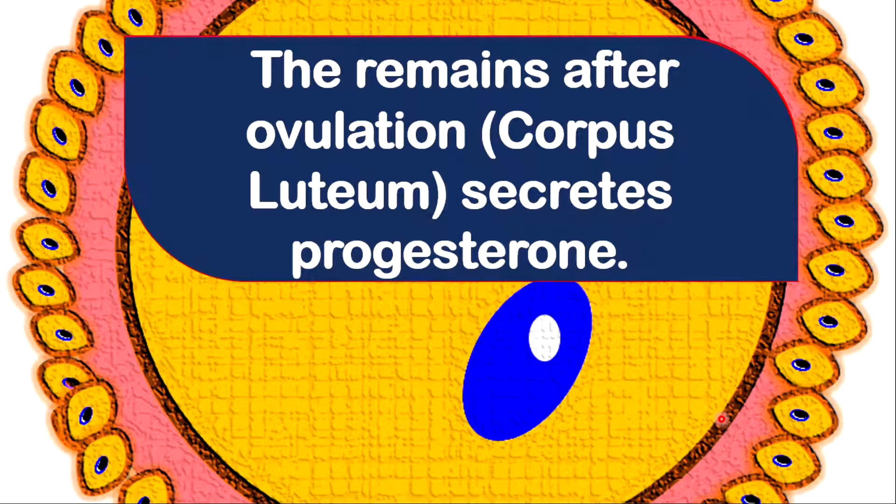The remaining portion of the egg after ovulation is called the corpus luteum. The corpus luteum is responsible to secrete progesterone. Progesterone, in turn, is responsible to maintain pregnancy and also to thicken the walls of the uterus.